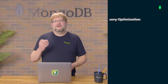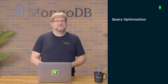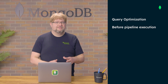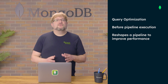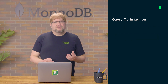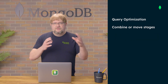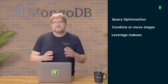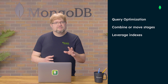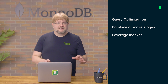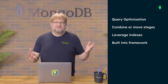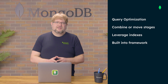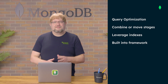Luckily, the query optimization phase happens automatically before pipeline execution, reshaping a pipeline to improve performance. For example, the query optimizer might combine or remove stages to leverage an index, as long as the final output isn't impacted. This optimization is built into the framework — we don't have to do anything to enable it. It's just helpful to know that it's there.